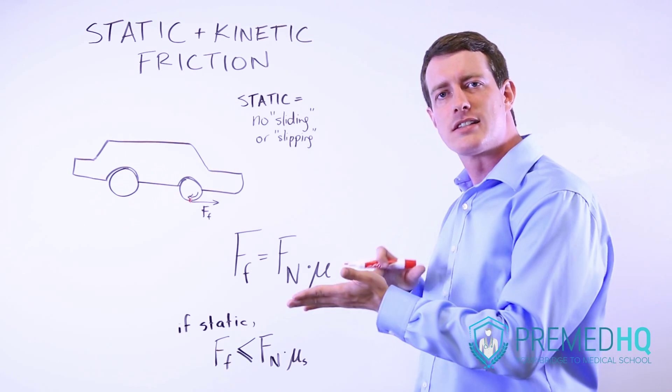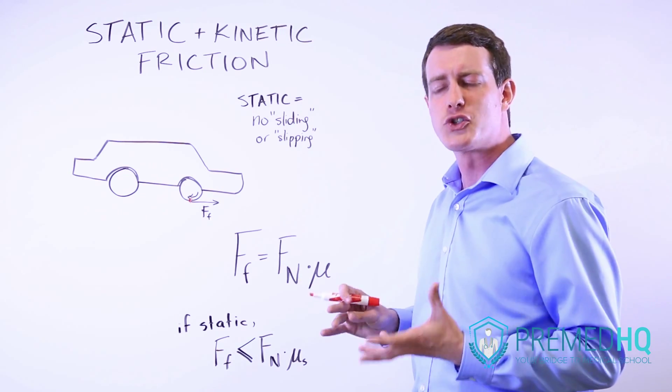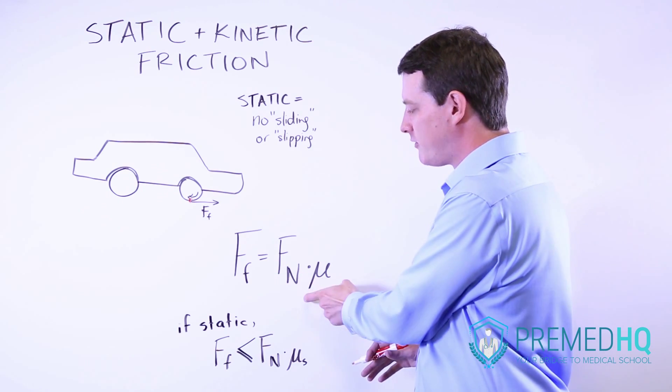But kinetic friction, because the thing is slipping on the other object, or it's sliding along another surface, that will always be equal to the normal force times mu.